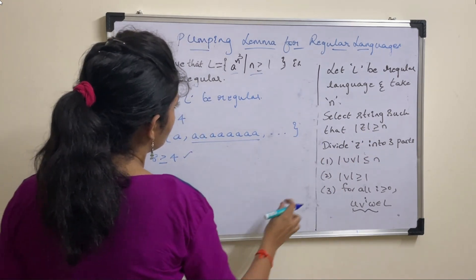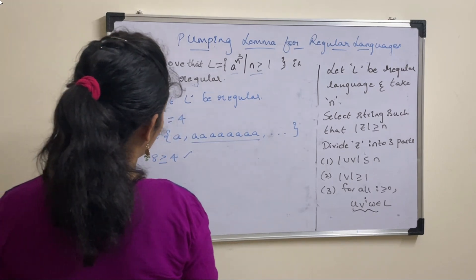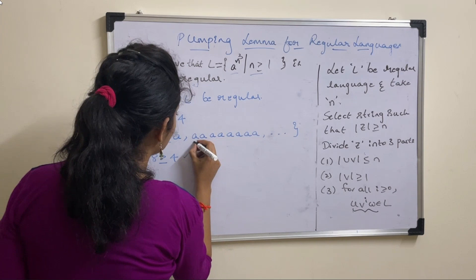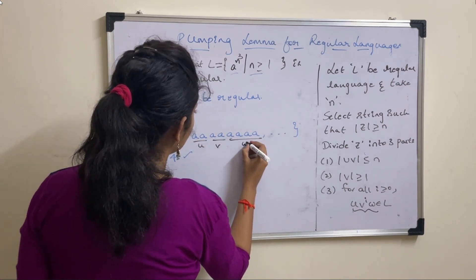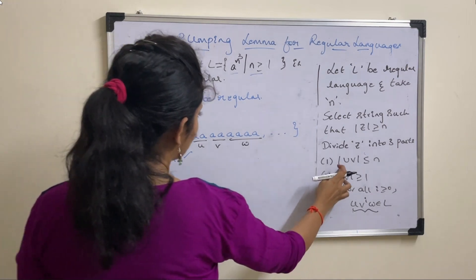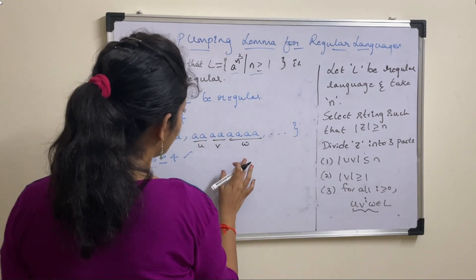Now divide this z into 3 parts. So let us divide this z into 3 parts: u, v, w, and check these 3 conditions. So this string division can be done in any way.